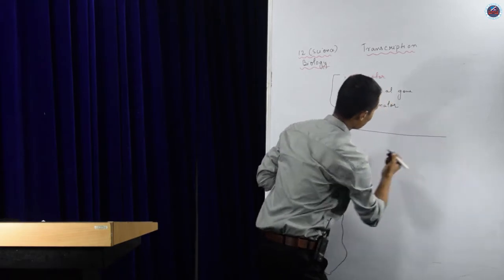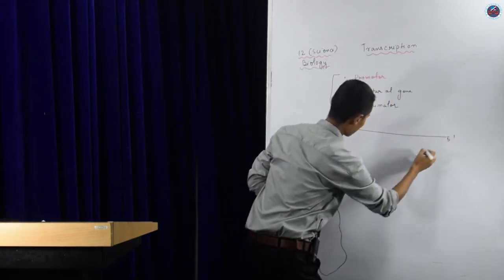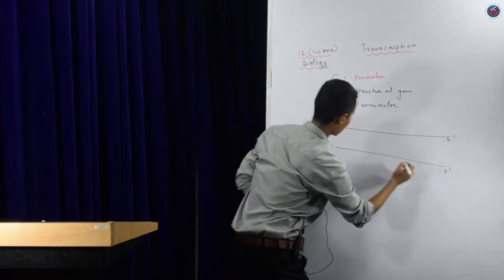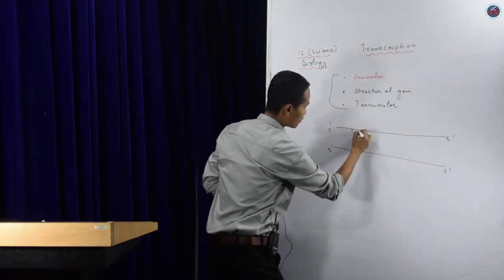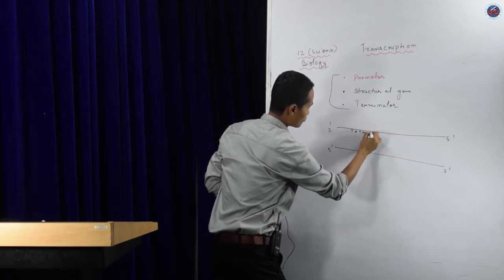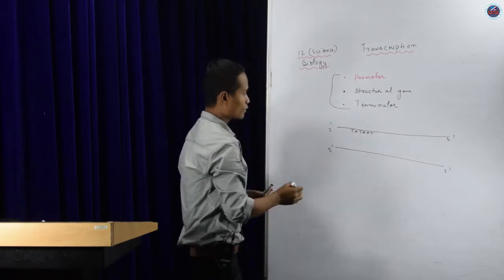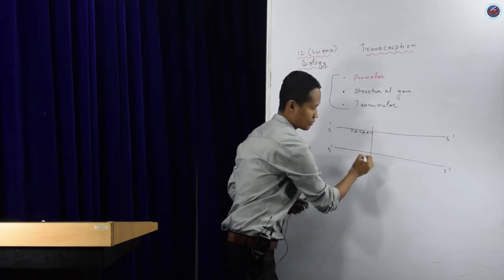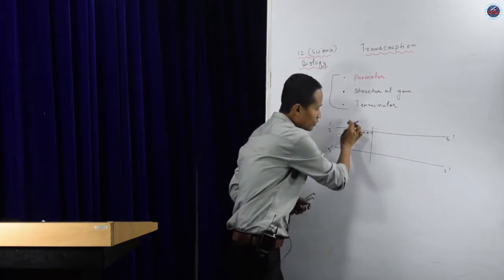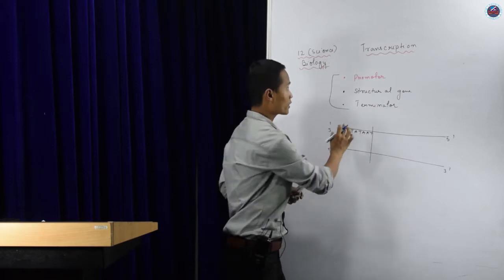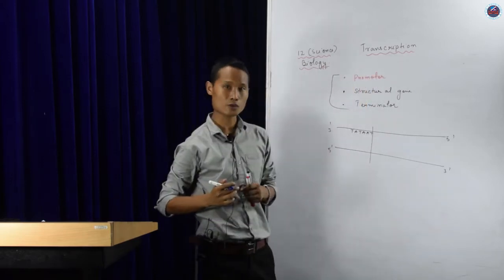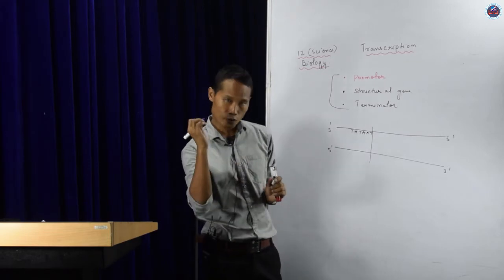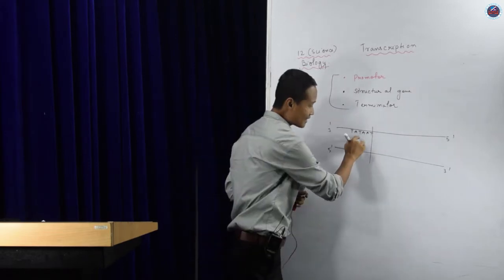The DNA strand runs 3' to 5', and the other runs 5' to 3'. In this area, just say there are TATA boxes, and in this position the promoter is located. This is the area from where the transcription process is going to start. But which molecule or protein is going to recognize this position?